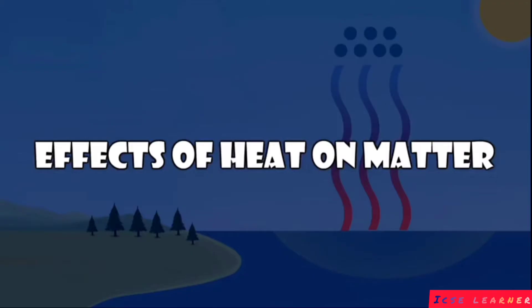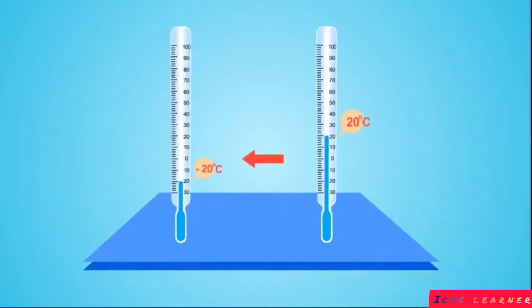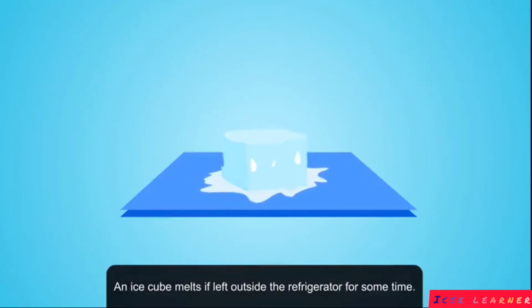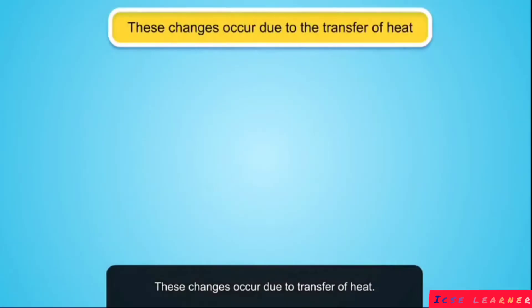Effects of heat on matter. Heat is a form of energy that flows from one place to another due to difference in temperatures. Let us consider some examples: an ice cube melts if left outside the refrigerator for some time, and tea gets cold if left out in the open. These changes occur due to transfer of heat.